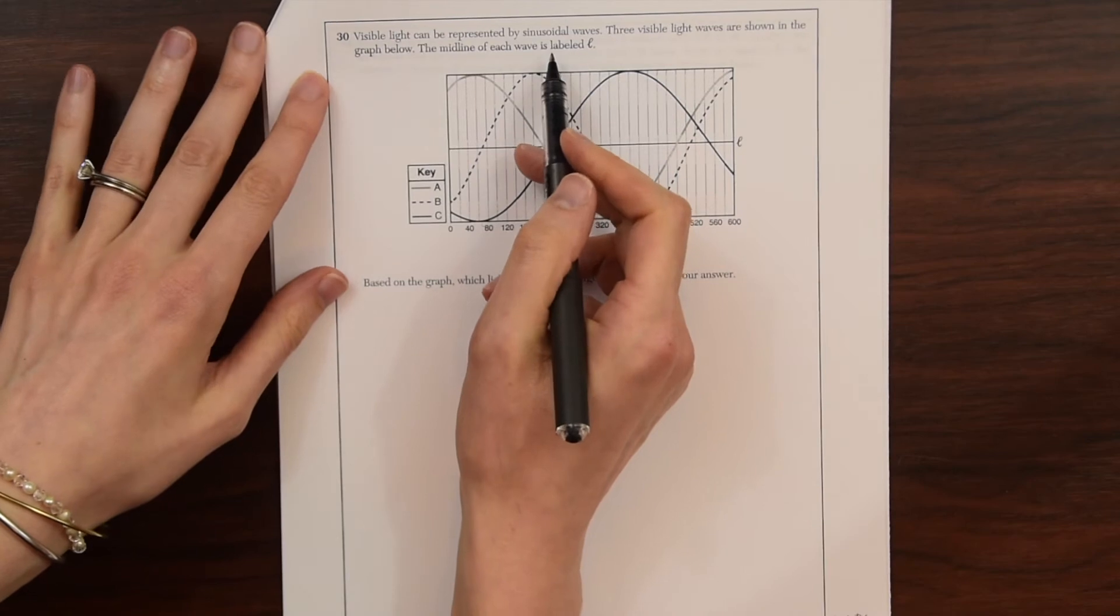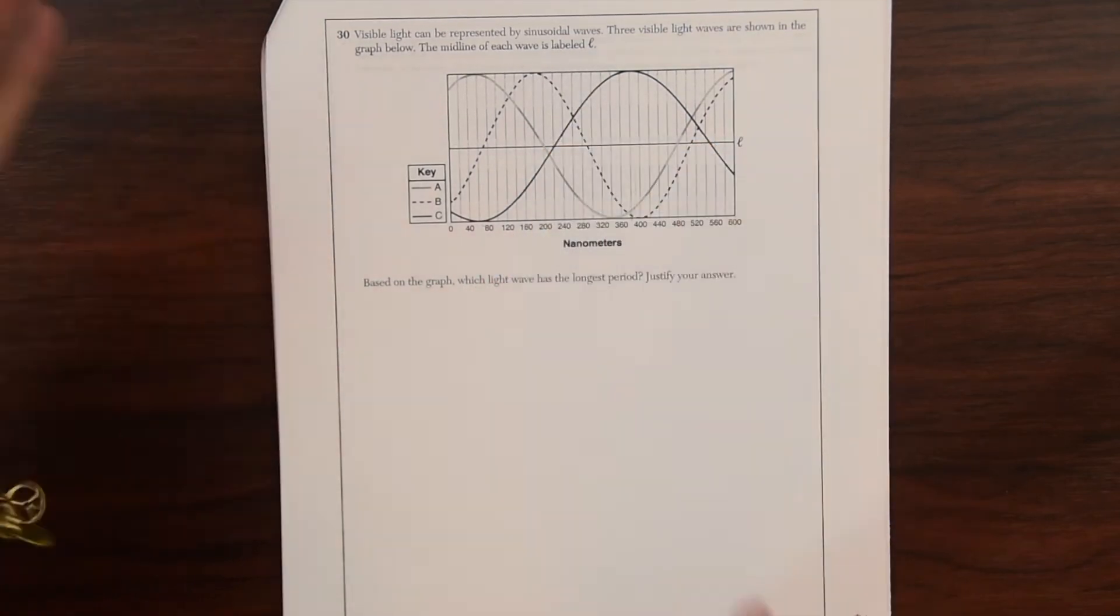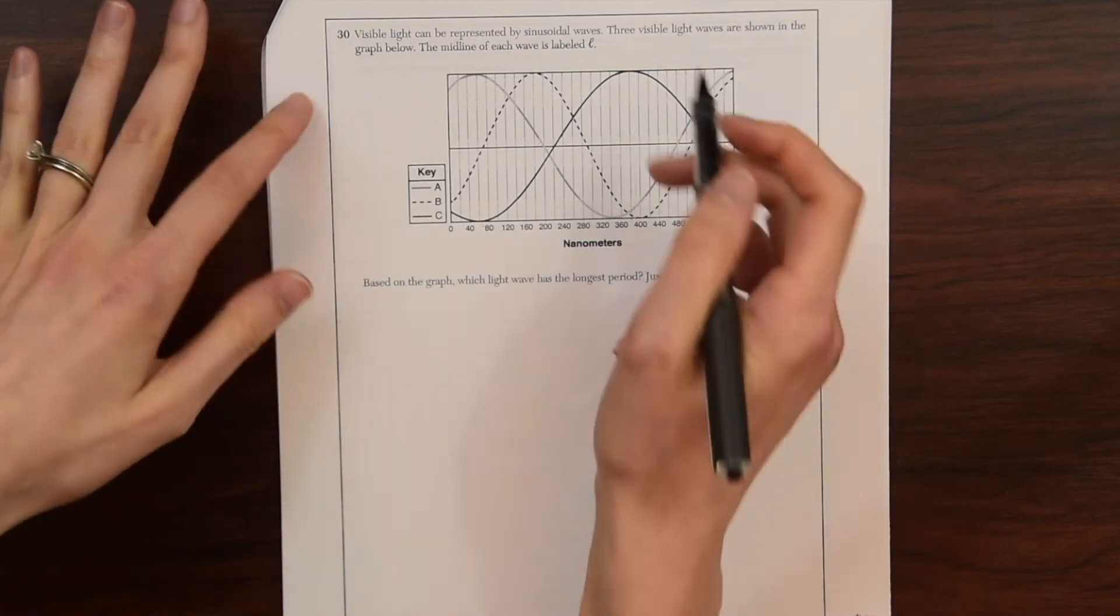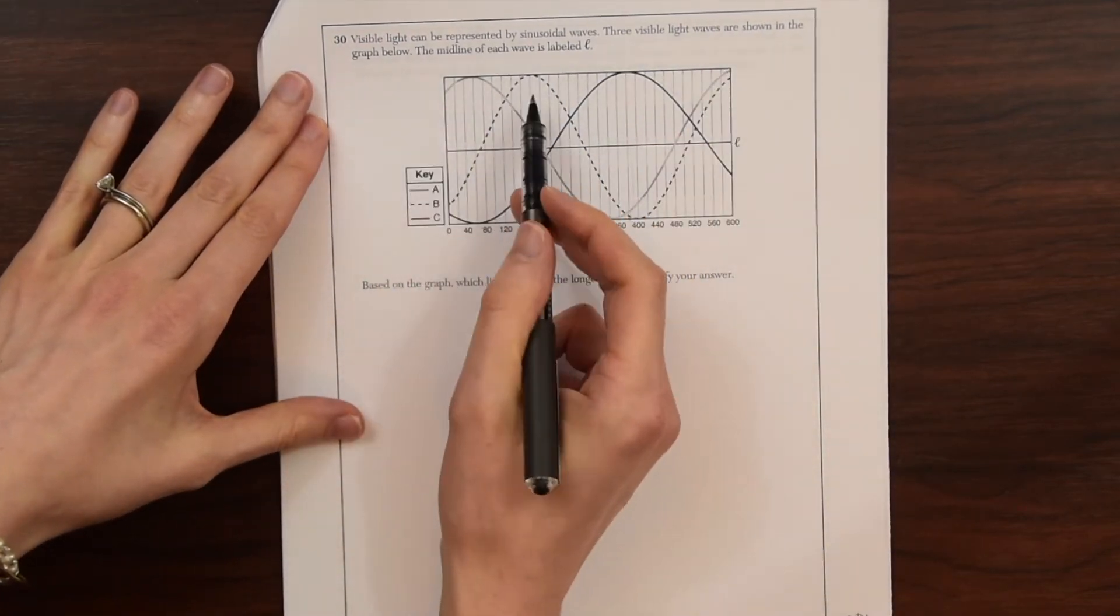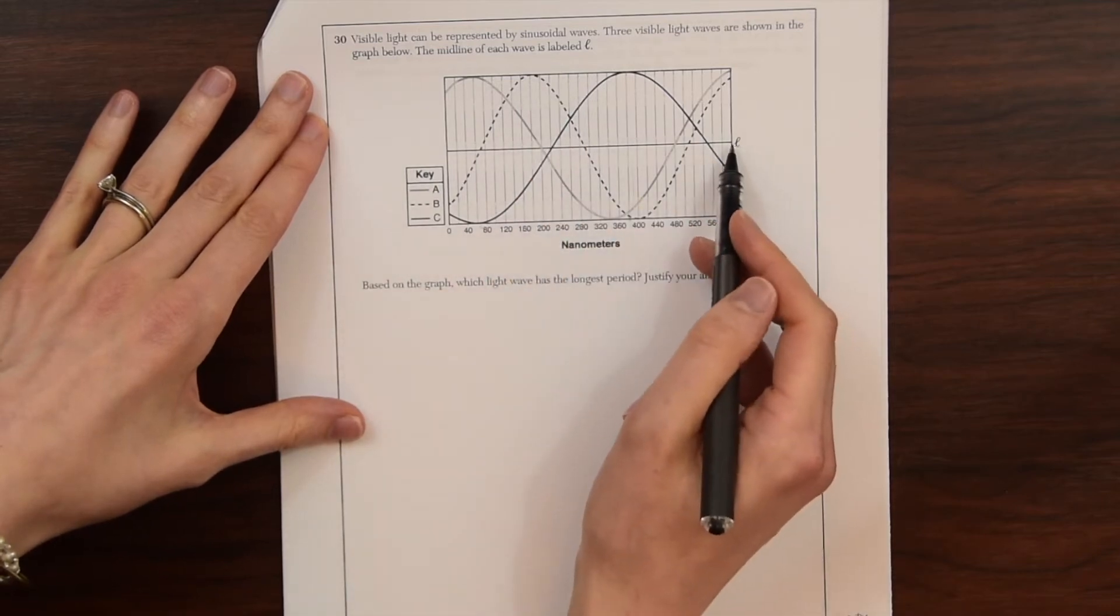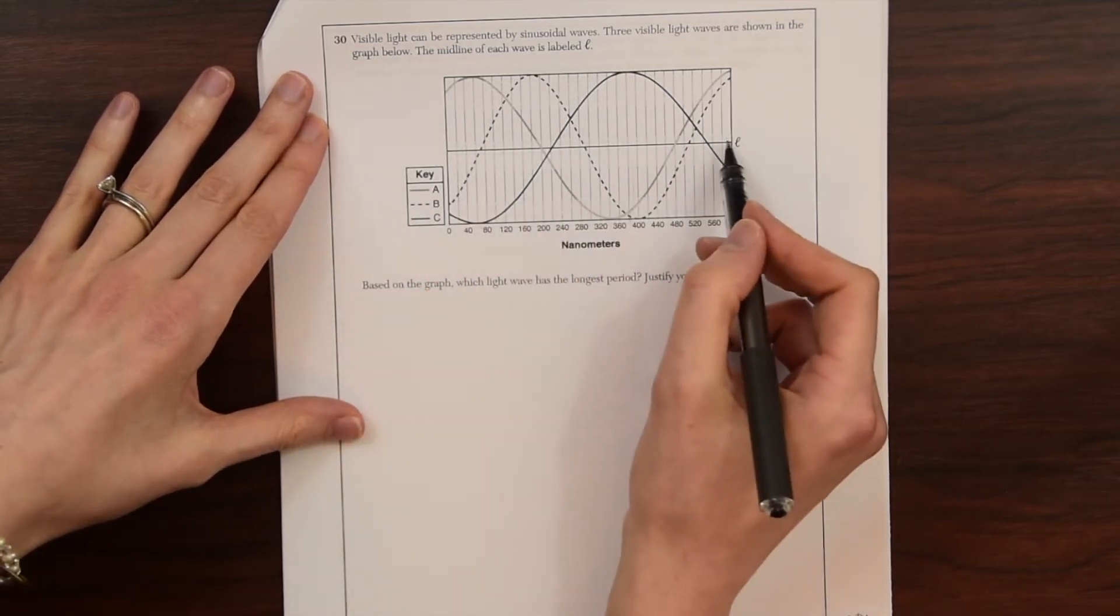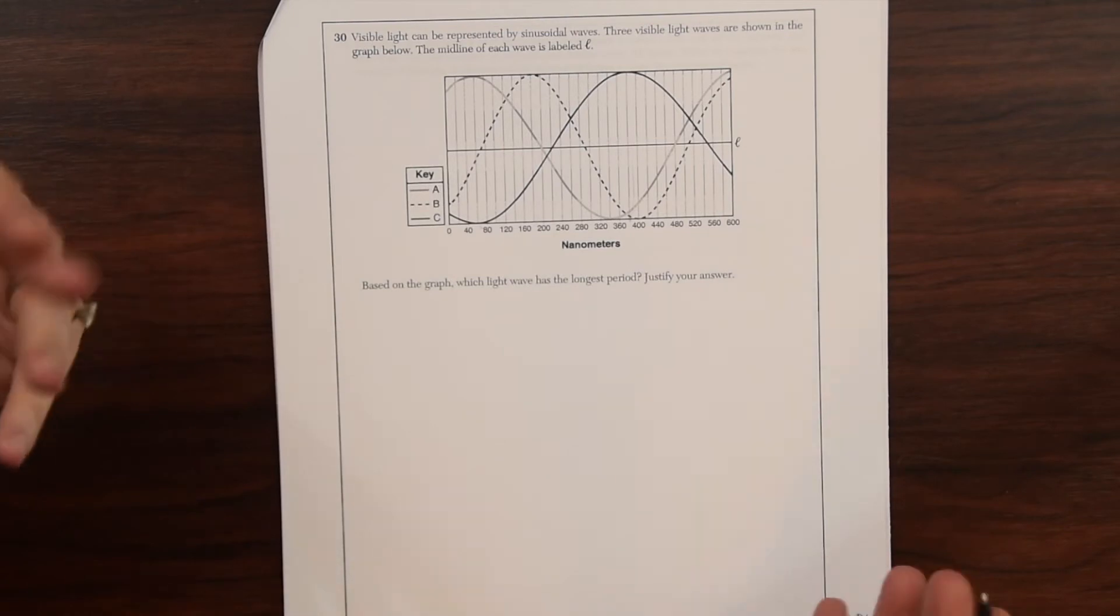Visible light can be represented by sinusoidal waves. So sinusoidal, we know we're going to be dealing with trig functions, specifically sine functions. Three visible light waves are shown in the graph below. The midline of each wave is labeled L. So this is the midline of each wave labeled, but we kind of think of this as the x-axis, right?